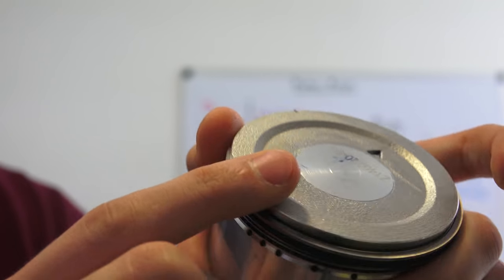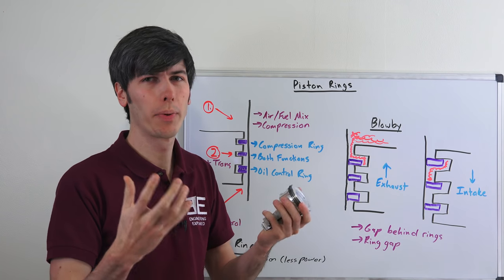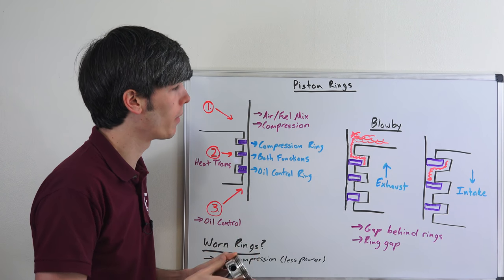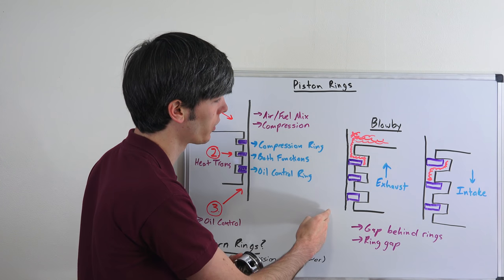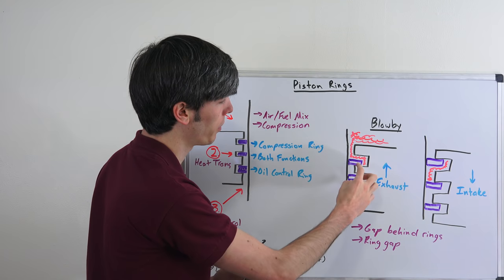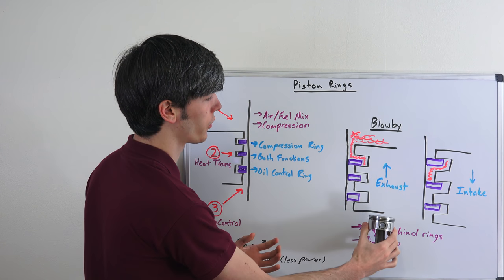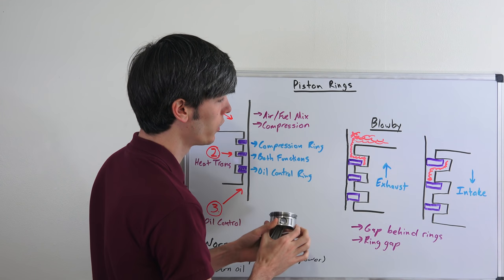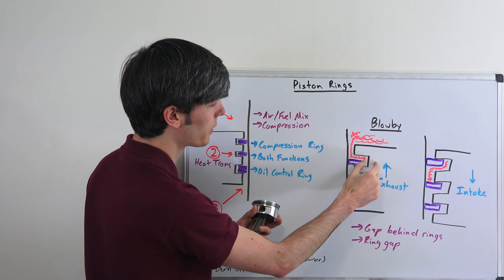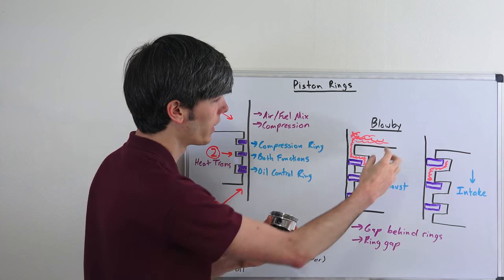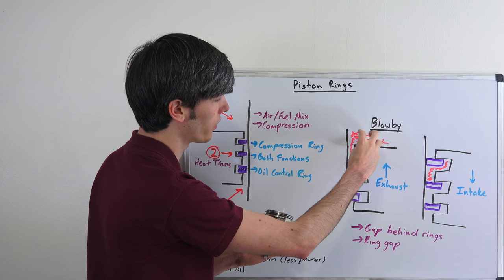So how do piston rings allow for blow-by? This is a bit of an exaggerated look into it, but here we have our cylinder wall, here we have our piston and here's our piston rings. On our exhaust stroke when this piston is moving up, you can see these piston rings are going to be pressed down and there's a gap behind them between them and the piston itself.